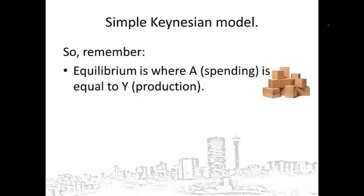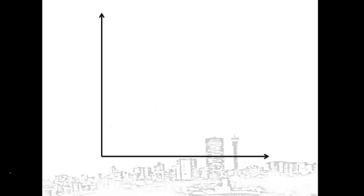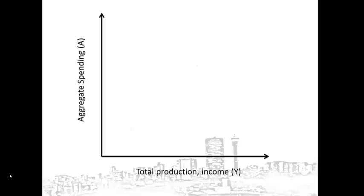We know equilibrium in the Keynesian model is always where spending is equal to production. Now let's look at how this equilibrium will look on a graph. If we want to show equilibrium on the Keynesian graph, we first have to label the axes. We put aggregate spending on the vertical axis and total production or income on the horizontal axis. Remember to put a zero at the origin. Now let's see where all the possible equilibrium points might be.